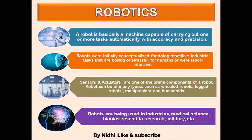A robot is basically a machine capable of carrying out one or more tasks automatically with accuracy and precision. A robot can be fully automatic or semi-automatic. Compared to other machines, a robot is programmable — it can follow instructions given through computer programs. A robot interacts with the physical world using sensors and actuators, which move the robot's joints.